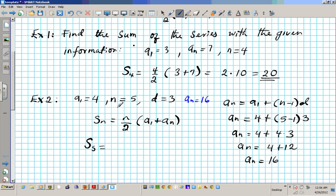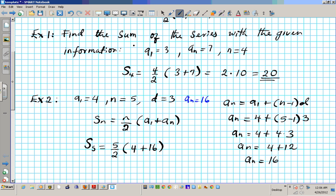So S sub 5, we know it's S sub 5 since n is 5, equals 5 over 2 times 4 plus 16. So we are going to have 5 over 2 times 20. Multiply across, we get 100 over 2, which is 50.